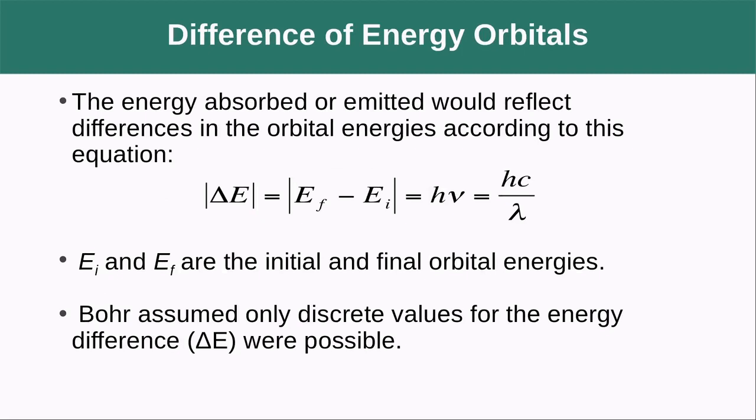The energy absorbed or emitted would reflect differences in the orbital energies according to this equation. So we have the change in energy is going to be equal to the final energy of the electron minus the initial energy of the electron. We already saw this with temperature and enthalpy. We were used to that kind of mathematical form. That's going to be equal to h times ν, like Planck said. Again, we can rewrite that in terms of wavelengths. And we're going to assume here that there are only discrete values for delta E, that there's only some delta E's that are permissible.